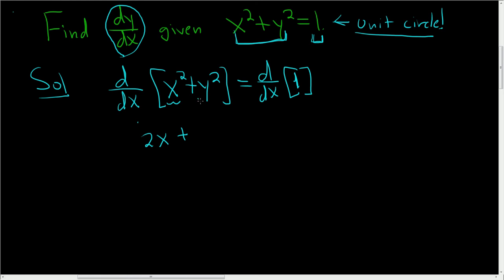Plus, now the derivative of y squared — we have to be careful. We have to use the chain rule, right? We're thinking of y as some function of x here. So you bring the 2 down and get 2y times the derivative of the inside. The inside is just y, so it's the derivative of y with respect to x — that's just dy/dx. And over here, the derivative of 1 is 0.